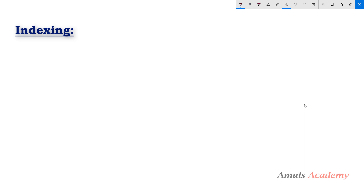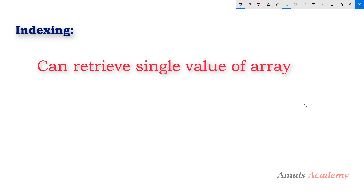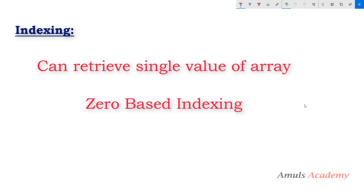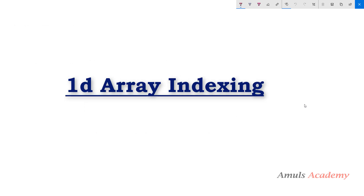Indexing — similar to list, we can access elements of an array using index. We can access a single element at a time using indexing, and elements of NumPy arrays follow zero-based indexing, meaning the first element index is zero. We can also use negative index to access elements from NumPy arrays. Next we'll see how to apply indexing on a one-dimensional array.